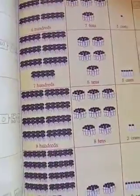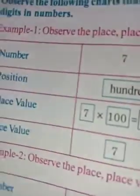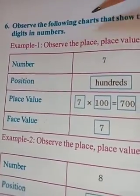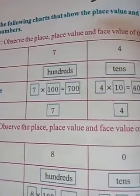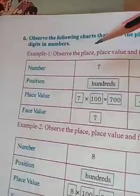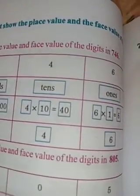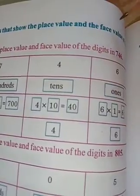Next page, take out the next page children. Page number 30. Observe the following charts that show the place value and the digits in numbers. Place value and face value.